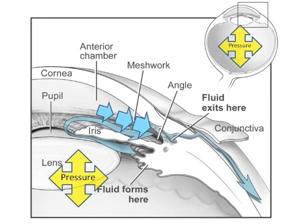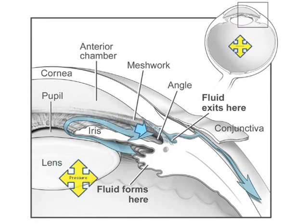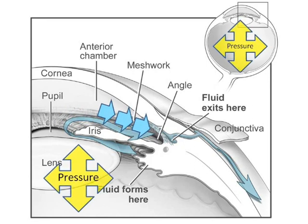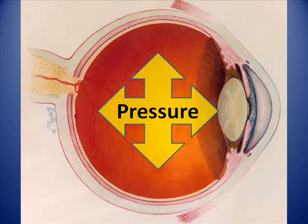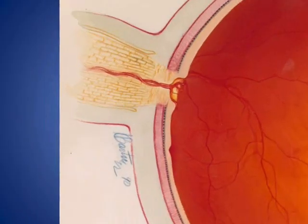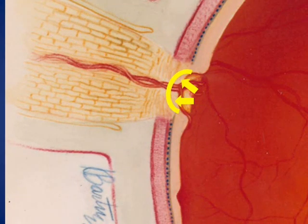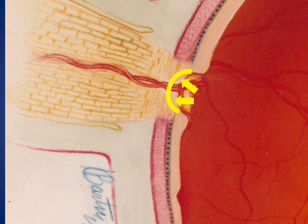If for some reason the fluid is prevented from exiting the eye, the internal pressure of the eye increases. As pressure within the eye increases, blood is kept from freely flowing in the optic disc. Over time, the optic nerve loses tissue mass, resulting in an optic disc whose profile has a deeper-than-normal cup-like shape. This damage to the optic disc may result in reduced vision.